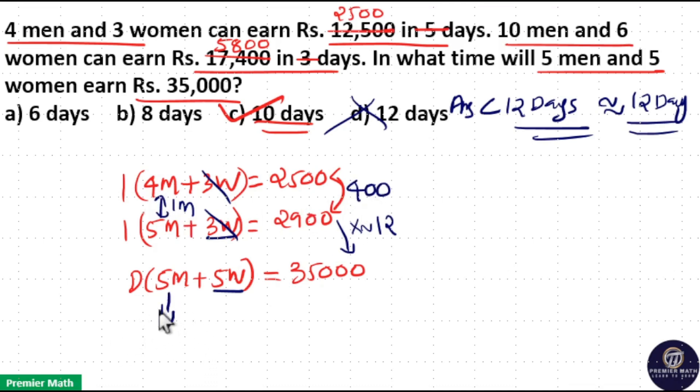Then 5 men will earn 5 into 400, $2,000 in 1 day. Same way if you substitute here, 4 men earn $1,600 in 1 day. Then 3 women will earn $2,500 minus $1,600, that is $900 in 1 day. 3 women earn $900 in 1 day means 1 woman earns $300 in 1 day.